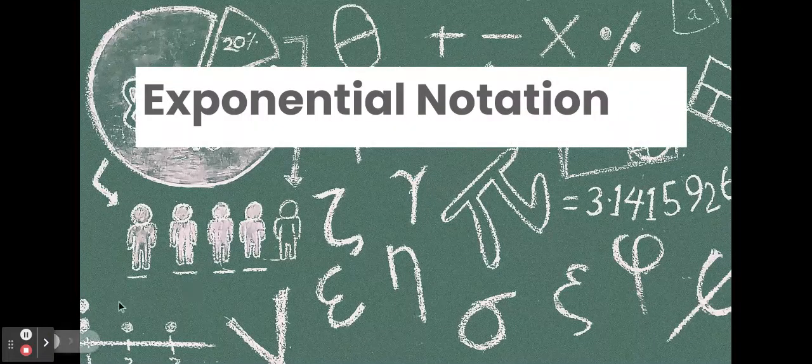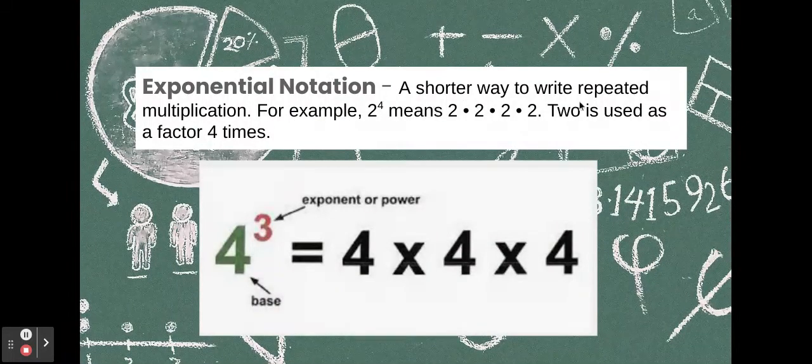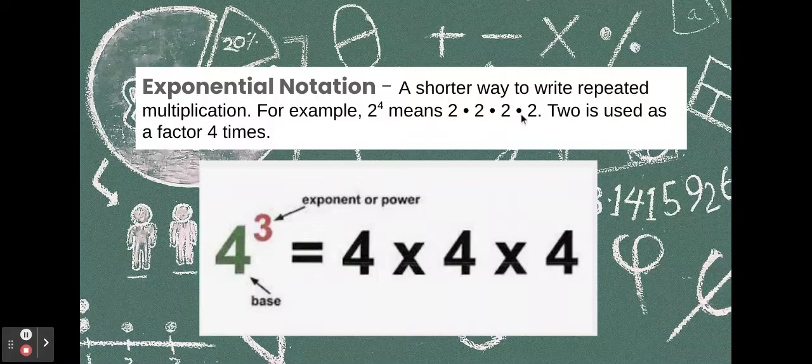Exponential notation. So, what is exponential notation? Well, exponential notation is a shorter way to write repeated multiplication. For example, 2 to the 4th power means 2 times 2 times 2 times 2. Whew! That's a lot. But 2 to the 4th power is much easier to say. 2 is used as a factor 4 times. So, the exponential notation is another way to write 4 times 4 times 4. We see 4 to the 3rd power. It's a quicker way. It's a shorter way to write multiplication.